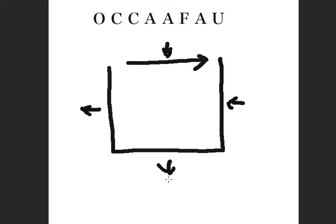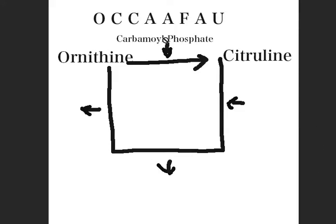The first reagent is ornithine, so you can draw ornithine here. Now ornithine reacts with carbamoyl phosphate, and that forms citrulline. So here we have carbamoyl phosphate, and this is one place where the ammonia comes into the cycle. Carbamoyl phosphate forms citrulline.